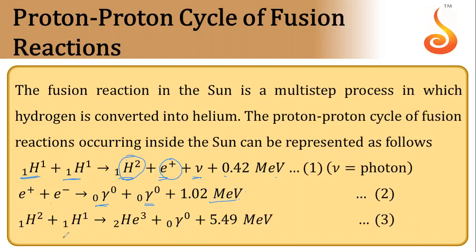Then this deuterium nuclei will combine again with one hydrogen nuclei to form helium-3. This helium of atomic number 2, atomic mass number 3, is also known as helium-3. When deuterium and hydrogen combine, they will form a helium-3 nuclei. Again, gamma radiation will be there and 5.49 MeV energy will be released.